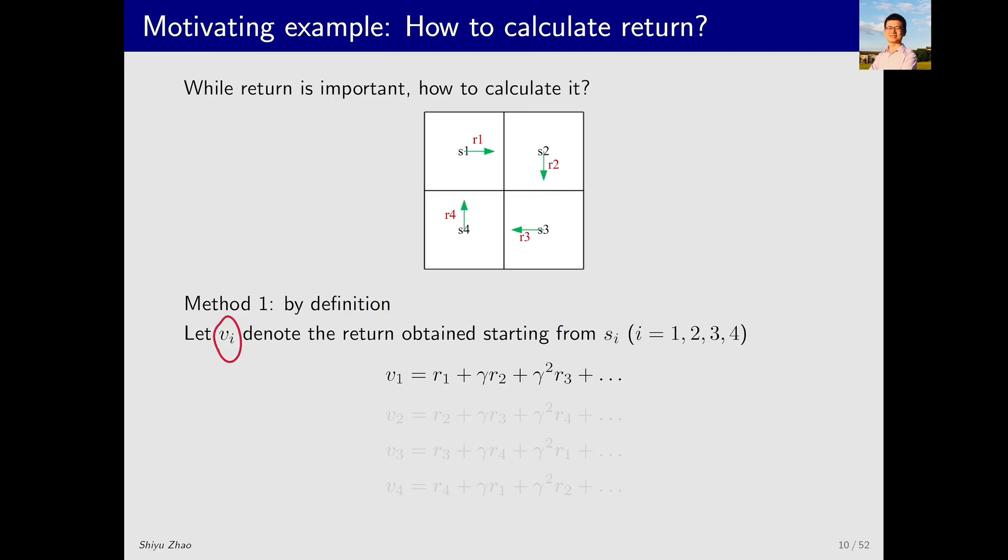To calculate the return from different starting states, we use a symbol, Vi, to represent the return starting from state Si. Let's consider state S1, for example. What is its return, V1? First, we examine its trajectory. It will move here, then here, and according to the policy, it will move here and here. After that, it will move again and continue to do so endlessly. Thus, this is its trajectory. The return corresponding to this trajectory is R1, followed by gamma R2, plus gamma squared R3, then plus gamma cubed R4, and so on. This calculation is based on the definition of the return.